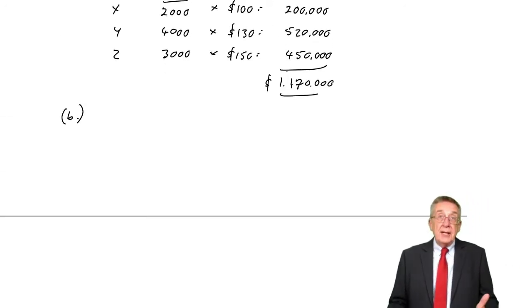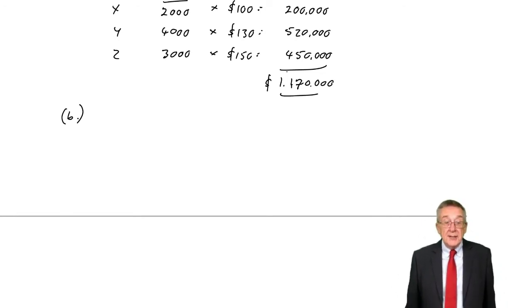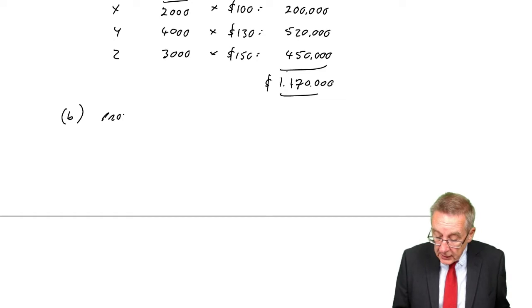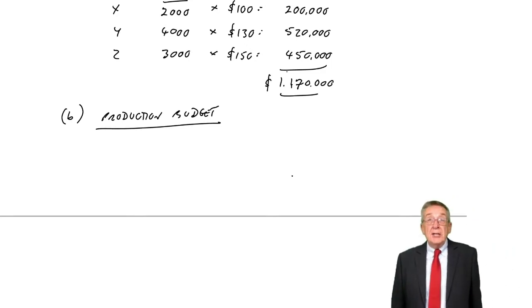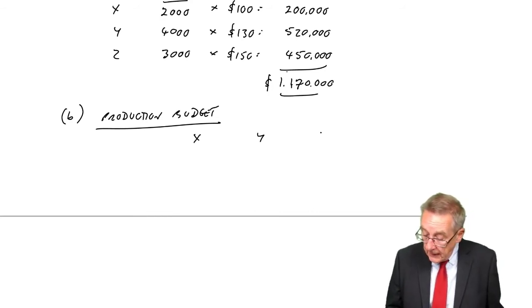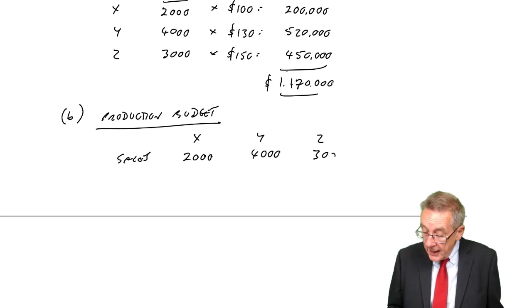Let's move on. We did sales first - that's usually our principal budget factor, the thing that's limiting us. But now we know how many we're selling. Let's look at B, which wants a production budget. Our production manager will need a budget for how many we expect them to produce. With three products X, Y, Z, we know how many we're budgeting on selling: 2,000 X's, 4,000 Y's, 3,000 Z's.